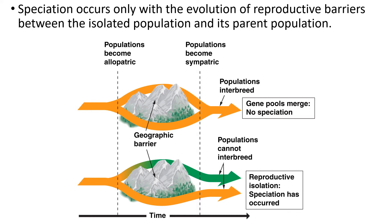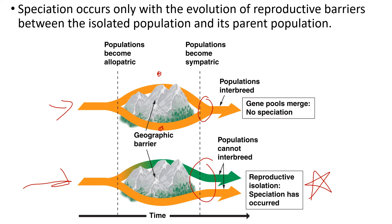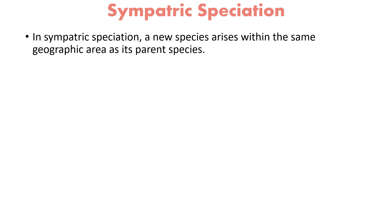The test of whether speciation has occurred is what happens when the two groups come back together. If a barrier like a mountain range separates two groups and they later rejoin and can still breed, there was no speciation — they remain the same species. But if, after geographic isolation, they come back together and can no longer interbreed, then we say speciation has taken place: they are very closely related but not the same species.